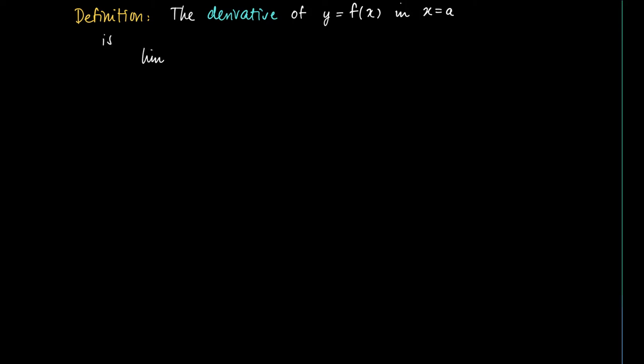The limit from x to a. In the former example we saw we had a property that a equals 1. So here we look at f(x) minus f(a) divided by x minus a.